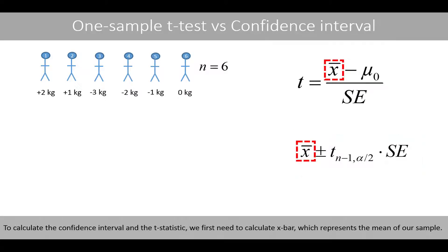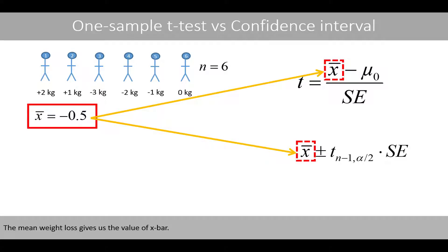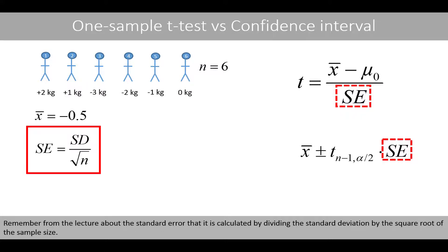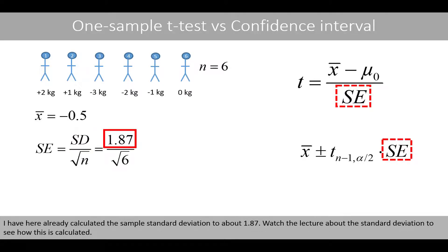To calculate the confidence interval and the t-statistic, we first need to calculate x-bar, which represents the mean of our sample. The mean change of the weights is negative 0.5, which means that the average weight loss was 0.5 kilos for the six individuals. Next, we calculate the standard error of the mean, which is calculated by dividing the standard deviation by the square root of the sample size. Since we do not know the population standard deviation, we estimate it from our sample. The sample standard deviation is approximately 1.87.